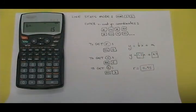I'm finished. The equation of my regression line is y equals 1.5x plus 4.5. And my R value is 0.95, which is a very strong positive correlation.